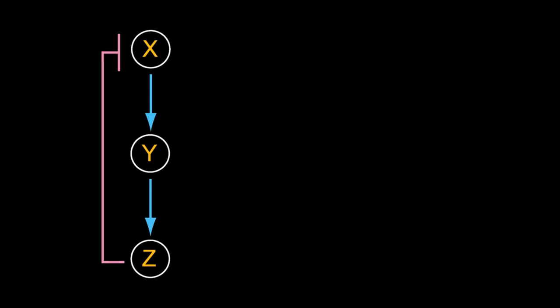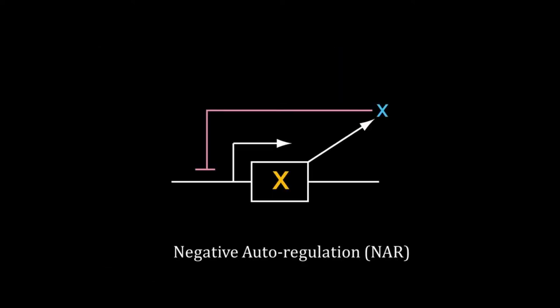In this video we will learn about oscillation generated through negative feedback. This is a negative feedback: X inhibits itself indirectly through Y and Z. What if it inhibits itself directly? That would be the most reduced negative feedback, and that has a name. It is called negative autoregulation or NAR. NARs are very frequent in transcriptional circuits.